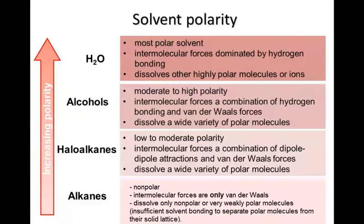This is where the alcohols fit in. They're similar to the haloalkanes in that they lie between the two extremes of polarity, but they are able to form hydrogen bonds, which makes them better solvents for other molecules that can also hydrogen bond. Since most organic reactions take place in solution, the choice of solvent is crucial — it must dissolve the reactants but not take part in the reaction. You must be able to remove it easily later without destroying the product, and ideally it should be low in toxicity. An understanding of solvents is an important skill for an organic chemist.